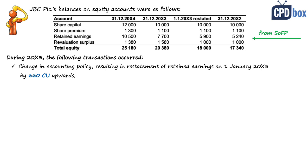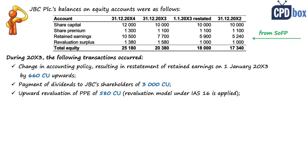Payment of dividends to JBC's shareholders of 3,000 currency units — a very common transaction. Upward revaluation of property, plant and equipment of 580 currency units, with the revaluation model under IAS 16 applied. You can also have a cash flow hedge reserve or revaluation of financial assets. Net profit for year 20x3 is 4,800 currency units — of course absolutely necessary information to state in the statement of changes in equity.